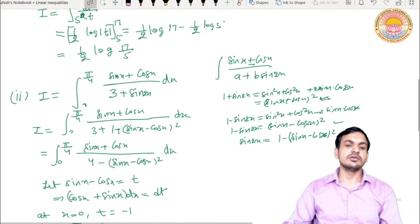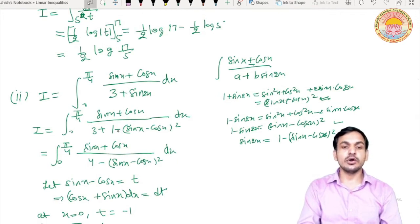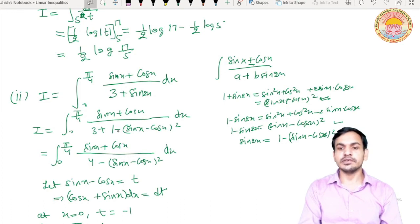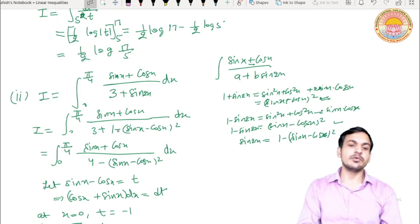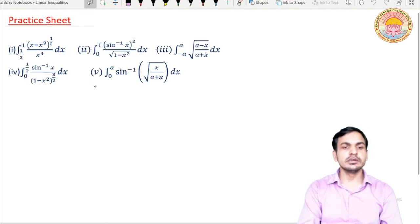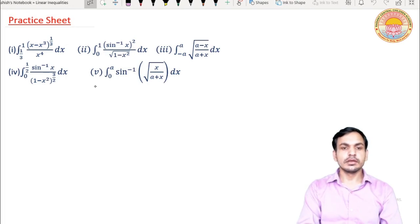Toh jab bhi aapko is type ki problem mile — numerator mein sin x plus cos x, sin x minus cos x, ya cos x minus sin x ho aur denominator mein sin 2x ho — to in dono mein se ek method use kar lenge. Agar plus sin hai to 1 minus (sin x minus cos x)² use karo, agar minus sin hai to (sin x + cos x)² minus 1 use karo. Substitution ke saath limits bhi change karte jao. This is the practice sheet for today — solve these integrals by using substitution. Thank you.